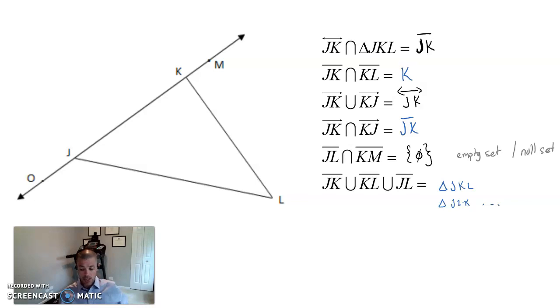and we want the intersection. What do they share? They share just from J to K, and that's a segment. Segment J to K, segment K to L, intersection. What do they share? It's just point K.